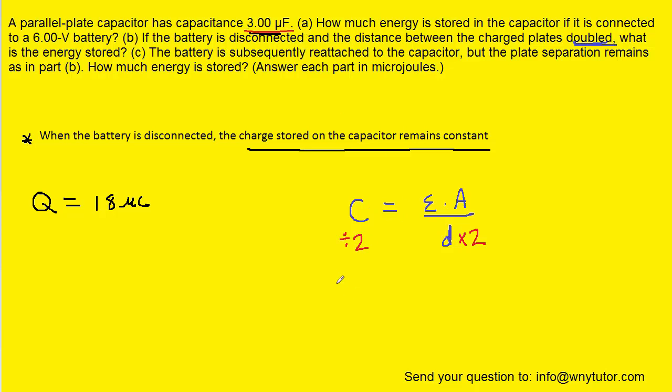So we would take the three microfarads and we would have to divide it by two to get 1.5 microfarads as the new capacitance. Again, that's because we're doubling the distance between the plates. So let's set the new capacitance to be 1.5 microfarads.